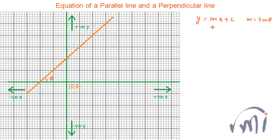If we are provided with the equation of a line, how do we find the equation of a line which is parallel to it? There can actually be infinite lines which are parallel to this line. All these lines are parallel to our original line whose equation was y = mx + c.